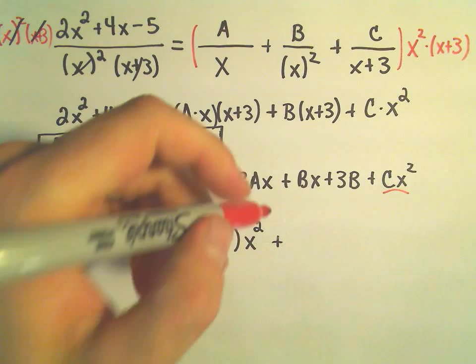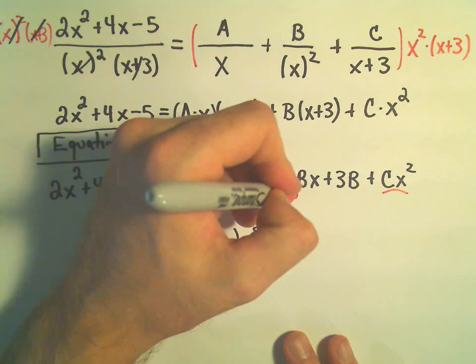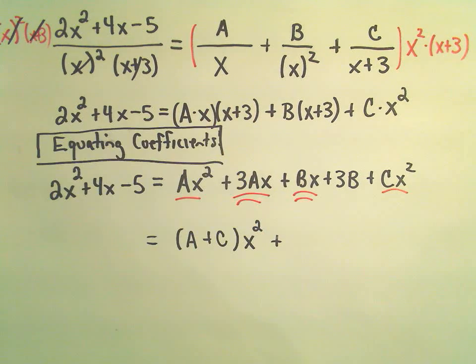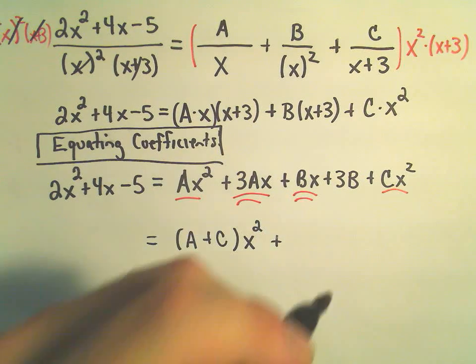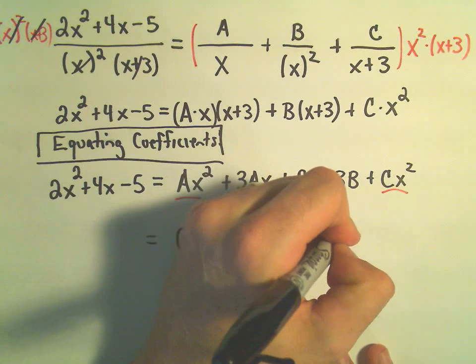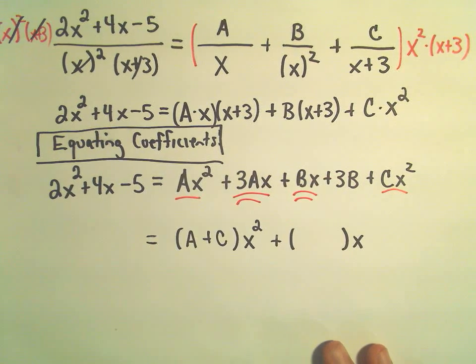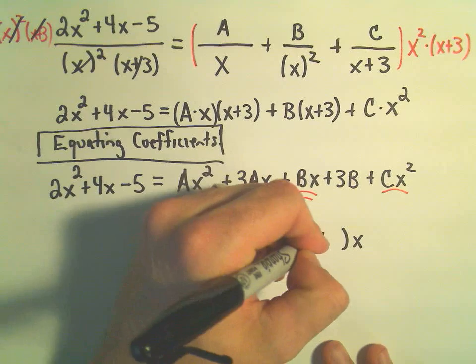And then in parentheses we would have the A plus C left over. Plus, now I see my x terms. Here's a term that involves only x. And another term that involves only x. So again, I'm going to factor that x out. But I'm going to factor it to the right.